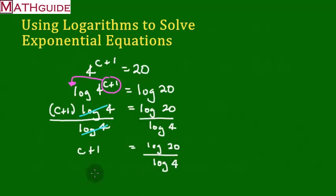Next thing I have to do is get the c alone, and I'm almost done. I just have to subtract 1 from both sides, and I will have c alone. So I could subtract 1 there, and I could subtract 1 there.